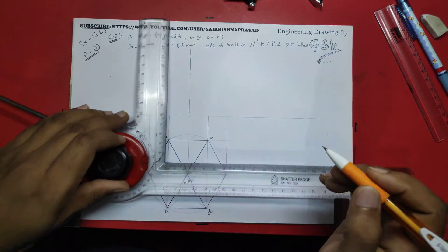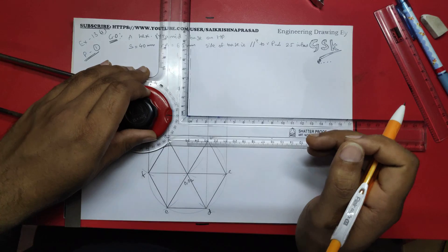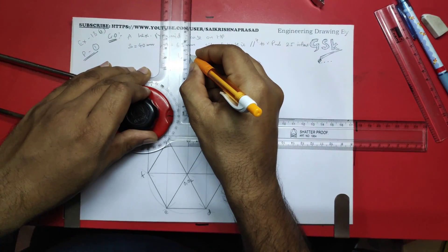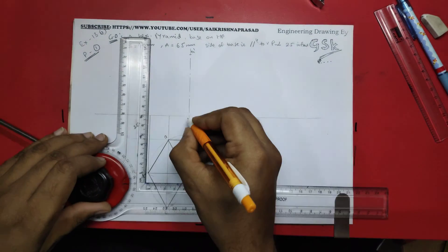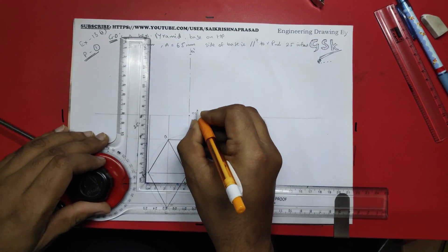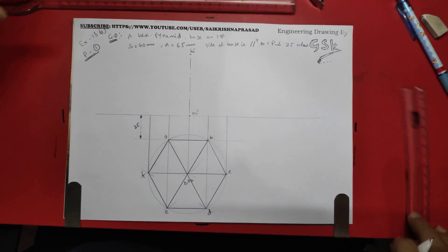o1, o2 would be the axis of this point. And the height of the pyramid is 65, so I'll extend this axis up to here. This would be o1 dash and this would be o2 dash. And let's join.